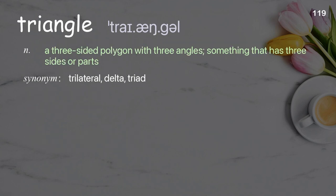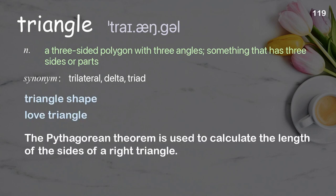Triangle: a three-sided polygon with three angles; something that has three sides or parts. Examples: triangle shape, love triangle. The Pythagorean theorem is used to calculate the length of the sides of a right triangle.